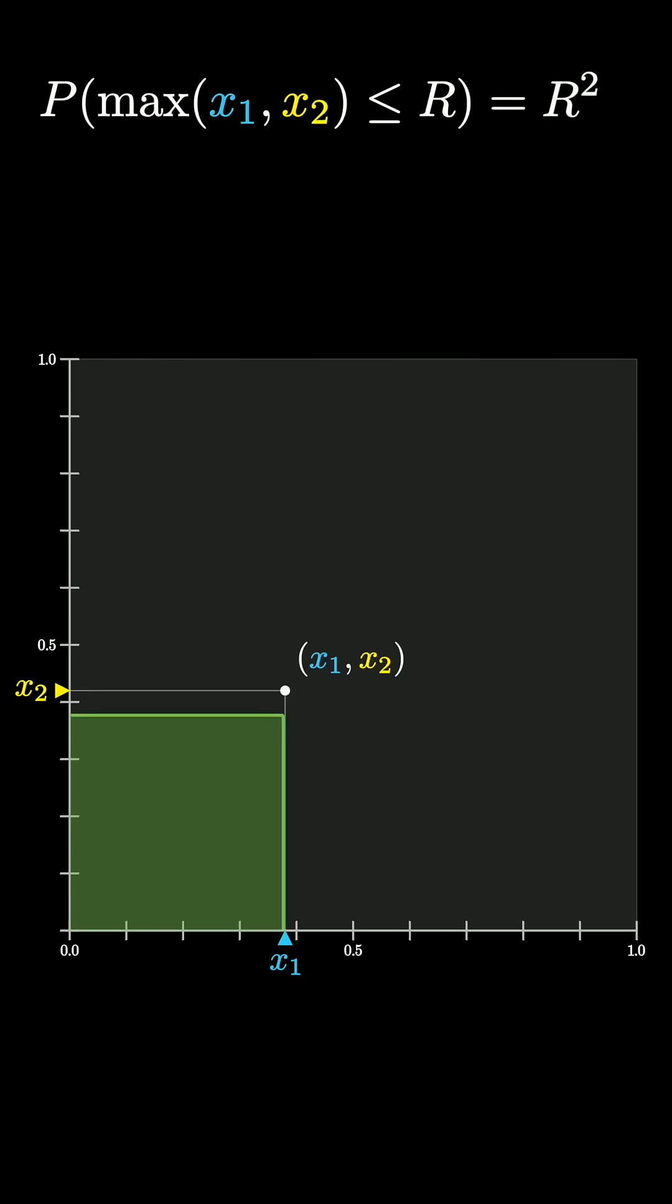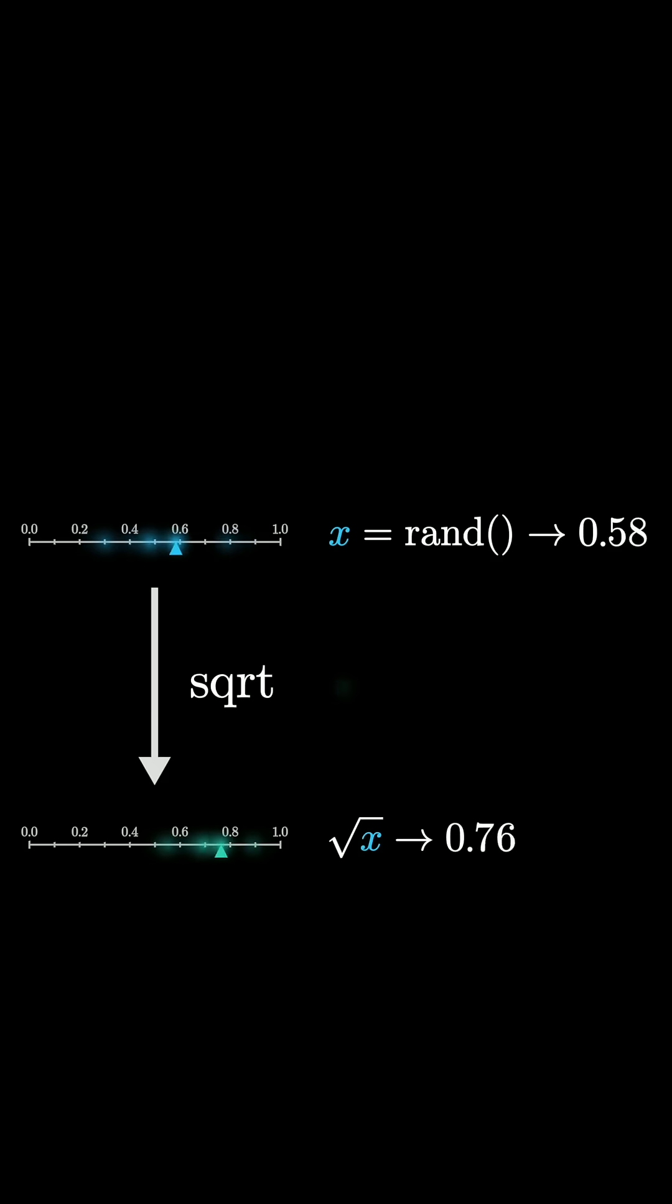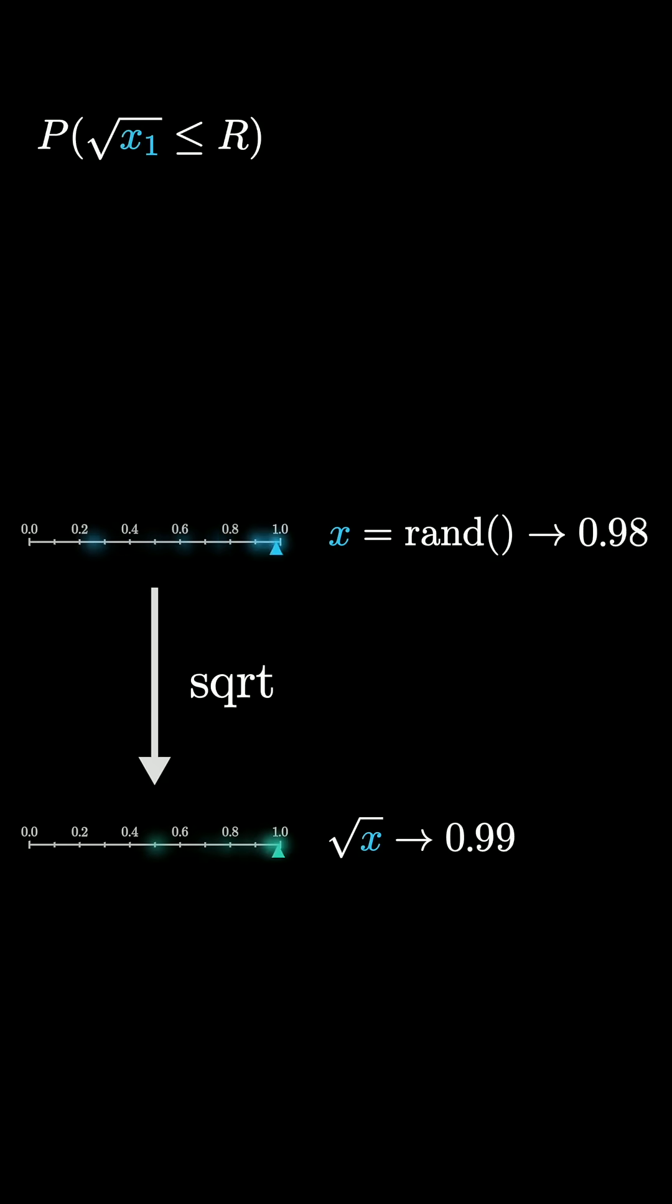This actually has a fancy name. It's called the cumulative distribution function for the random variable. But now think about the other case where you're taking a square root. What is the probability that the square root of one of these values is less than or equal to some number r?